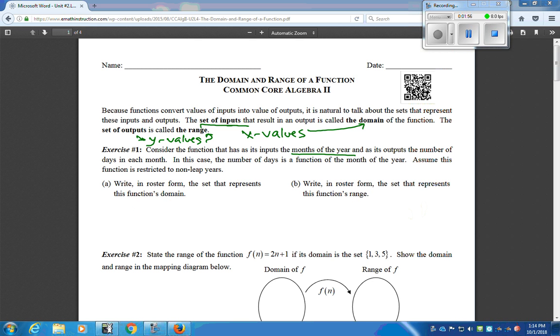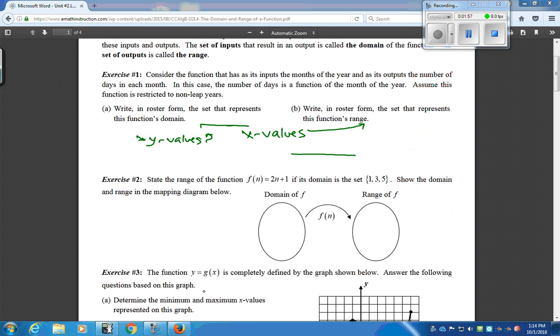Now, going on to exercise 2, they want us to state the range for certain domain values. So, they want us to do 1, 3, and 5. So, we have to apply the rule, which is 2n plus 1. So, if I'm doing the first one, I'm going to put 1 in. And then I'm going to have 2 times 1, which is 2, plus 1, which is 3. So, that'll be part of my range.